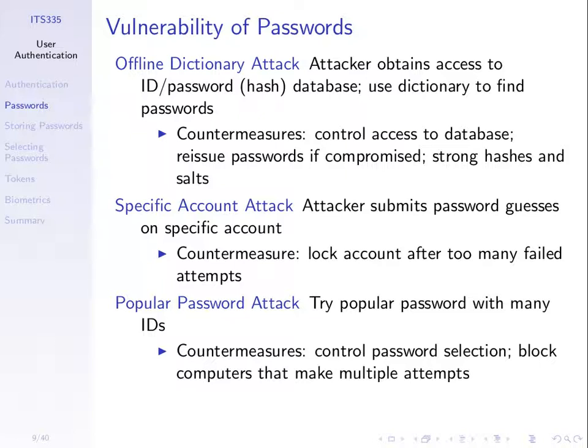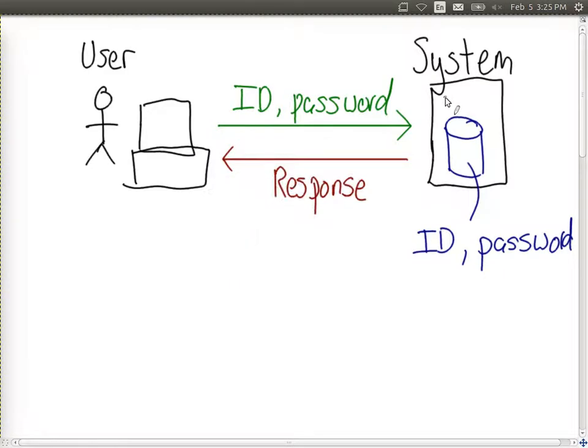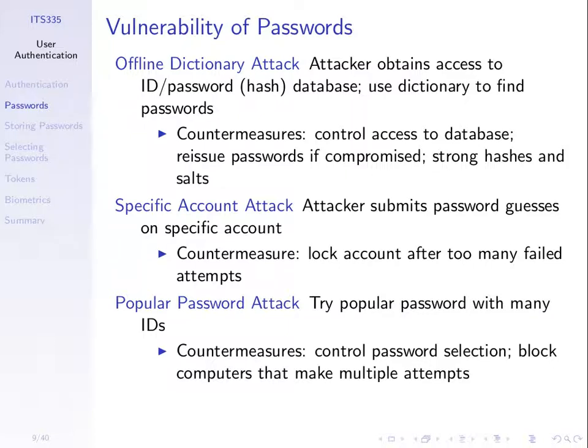To stop offline attacks, we control access to the database so no one can just download it. Even if someone does get access, we use techniques like encryption or hashing. Instead of using encryption (which requires key management), we typically use hash functions to store passwords. If an attacker gets the database, they still can't directly read the passwords — they must work to reverse the hashes.